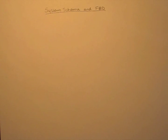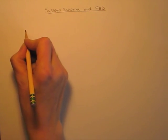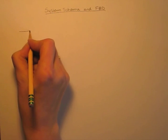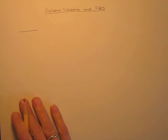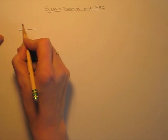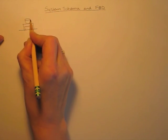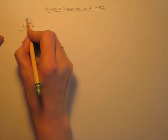In this video, I'm going to do an example of how to draw a color-coded system schema diagram and free body diagrams for each of the objects involved in the situation. Our situation is going to be the surface of the earth, a table, with a cup of hot chocolate.